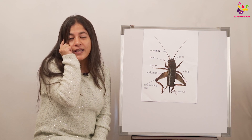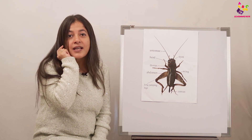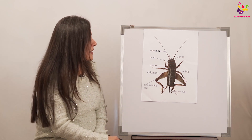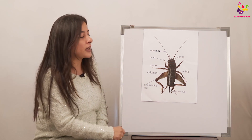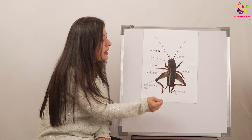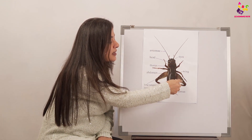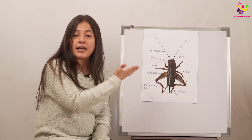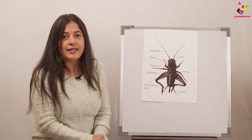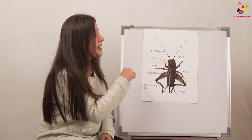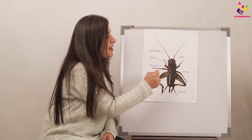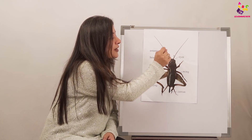Most of the insects have six legs. So let's count the legs of the cricket — one, two, three, four, five, six! The cricket has six legs, which also makes it an insect. And insects have two antennae — see, these are the antennae of the cricket.